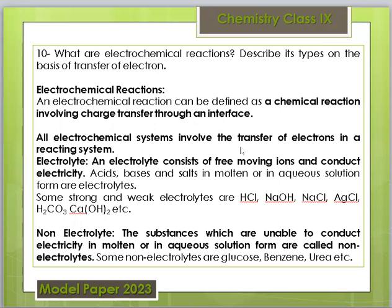An electrochemical system involves transfer of electrons in the reacting system. The reason for chemical reaction is the transfer of electrons — electron loss or gain. The substances that undergo electron transfer are electrolytes. Looking at bonding: ionic bonding produces cations and anions. Cations lose electrons and anions gain electrons. All such ionic substances are electrolytes, which in liquid or molten state can conduct electricity.